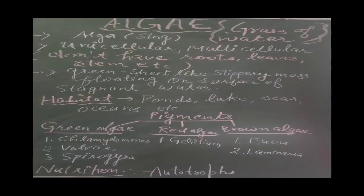The next microorganism is algae. Algae is also considered as the grass of water. Algae is always found in a floating position over stagnant water. It is unicellular and multicellular. They also don't have root, stem or leaves. They are a green sheet-like slippery mass floating on the surface of stagnant water.